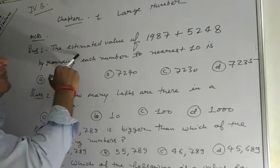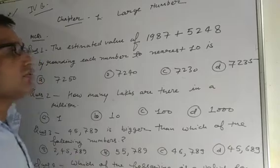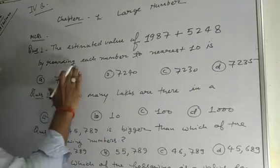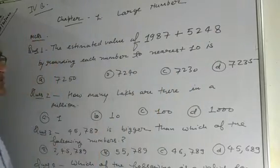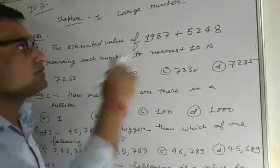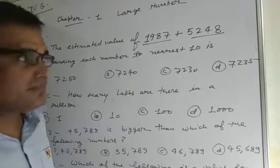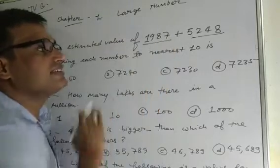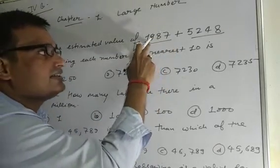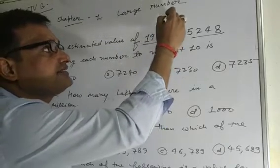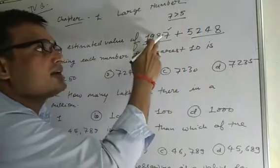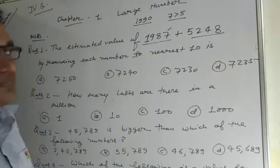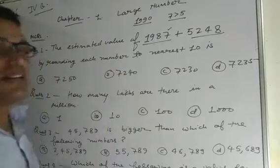Question number 1. The estimated value of 1,987 plus 5,248 by rounding each number to the nearest 10. First we round these two numbers to the nearest 10. When we round any number to the nearest 10, we check the units place digit. In 1,987, the digit 7 is greater than 5, so 1 is added to 8. We get 1,990. This is the estimated value to the nearest 10.